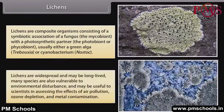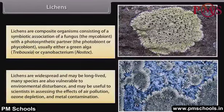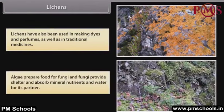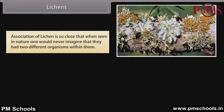Lichens are widespread and may be long-lived. Many species are also vulnerable to environmental disturbance and may be useful to scientists in assessing the effects of air pollution, ozone depletion and metal contamination. Lichens have also been used in making dyes and perfumes, as well as in traditional medicines. Algae prepare food for fungi, and fungi provide shelter and absorb mineral nutrients and water for their partner. The association of lichen is so close that in nature, one would never imagine they contained two different organisms.